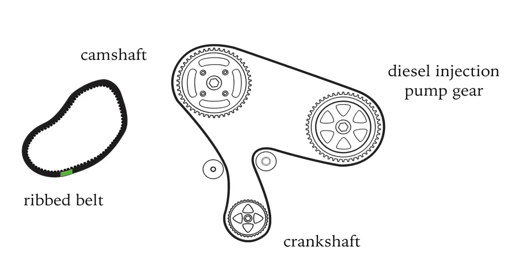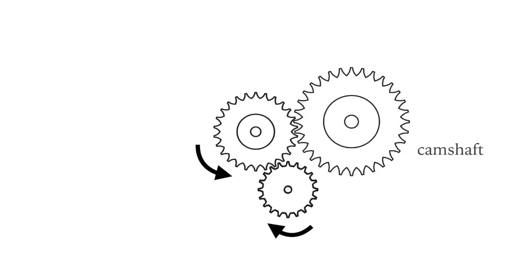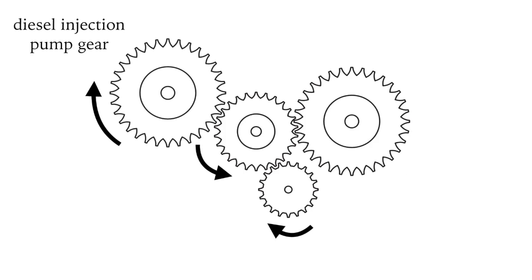The timing belt fits around the pulleys with flat teeth or sprockets and is tightened by a tensioner. A timing gear uses an idler gear between the crankshaft and the camshaft and injection pump. The idler turns in the opposite direction of the crankshaft, allowing the camshaft and injection pump to turn in the same direction as the crankshaft.